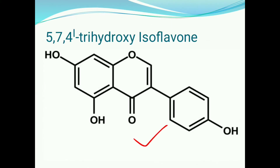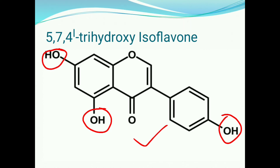This is the structure of genistein. This structure contains three hydroxy groups presented at 4, 5, and 7 positions, and also this structure contains a C=O group. So this is also called as 4,5,7-trihydroxy isoflavone.